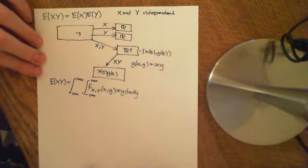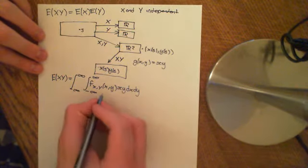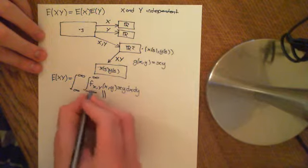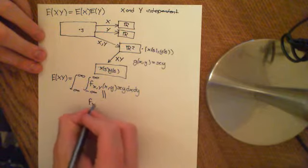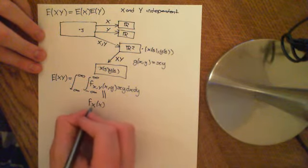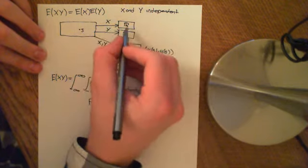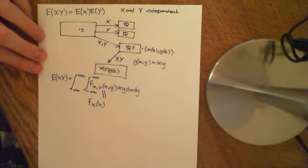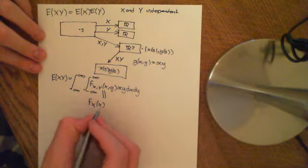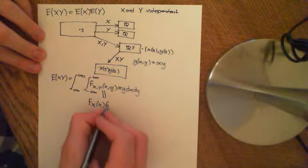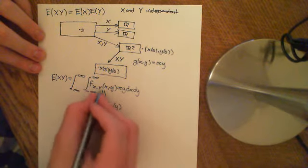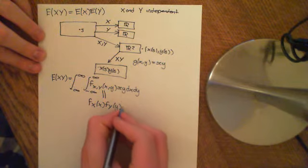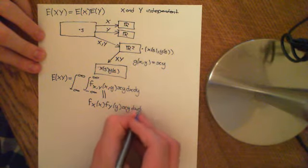Now is where we use the fact that X and Y are independent. If X and Y are independent, then this joint PDF is equal to the two marginals multiplied together — the marginal PDF of X times the marginal PDF of Y. So the joint PDF f(x, y) equals fₓ(x) times f_Y(y), and we integrate over x times y, dx dy.